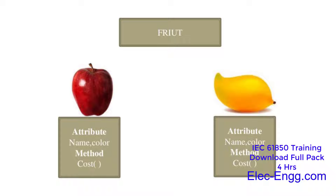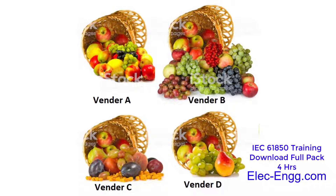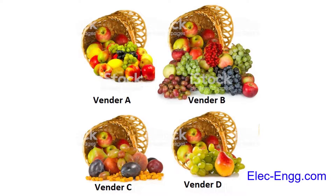We can use those attributes for any objects — for example, a red apple fruit or a yellow mango fruit. If we use object-oriented modeling to classify fruits, we can name the objects regardless of their location, whether in basket A, B, C, or D. Of course, the hierarchical name will change — for example, 'red apple fruit in basket A' or 'red apple fruit in basket B'.